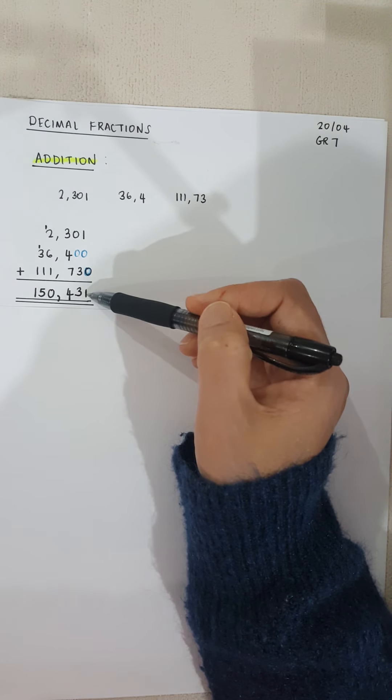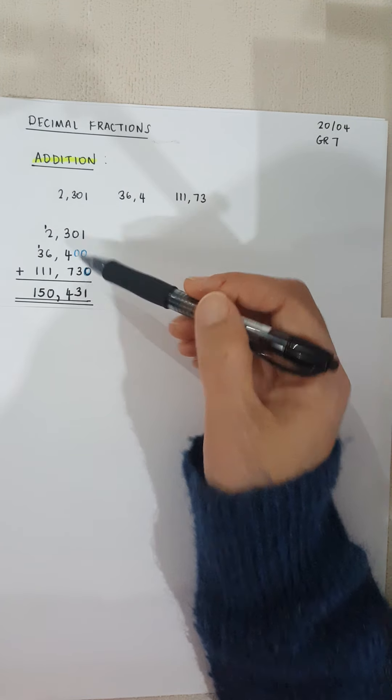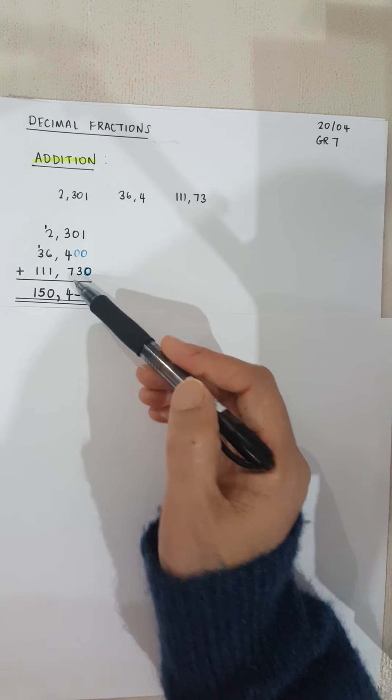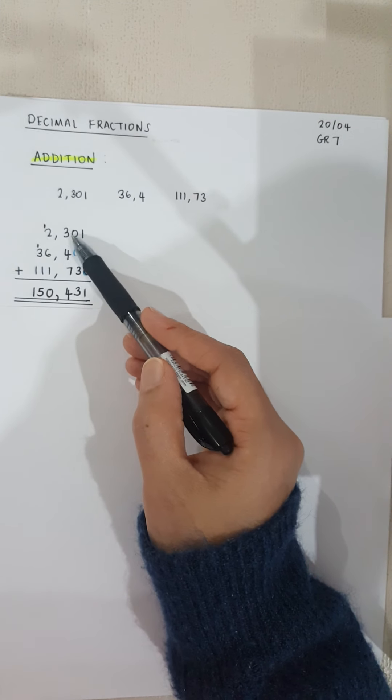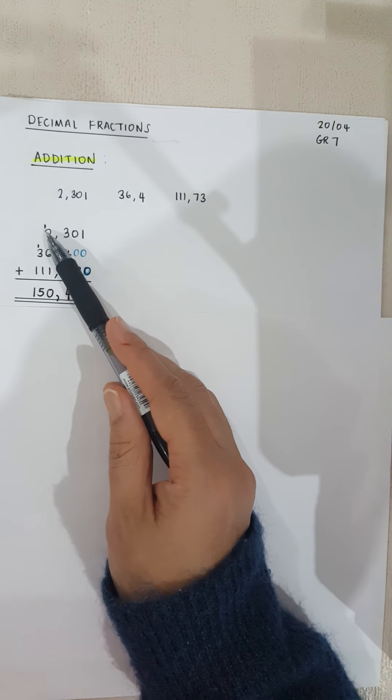I've written them down in a column method. One plus zero plus zero gives me one. Zero plus zero plus three gives me three. Three plus four plus seven gives me four plus three, seven plus another seven gives me 14. So I carry the one on the top.